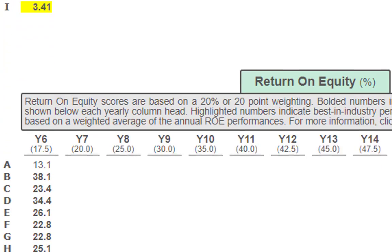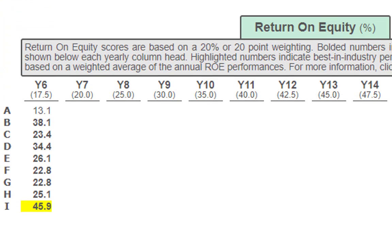Let's jump down to return on equity. Team I again — so there's no surprise why team I is leading the scoreboard, at 45.9. Great job. Everyone else met expectations — fantastic. Again, that was not the case in the practice round, so obviously you understand what strategy you need to implement to be competitive, except for team A. But let's give them a few years.